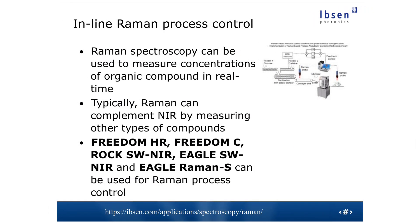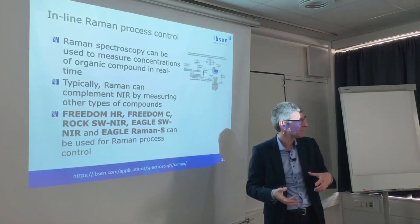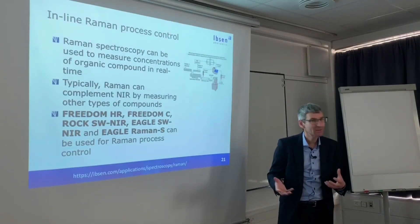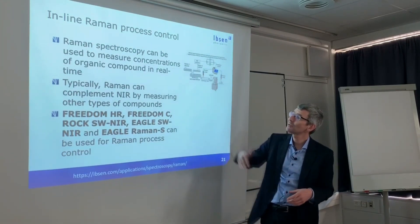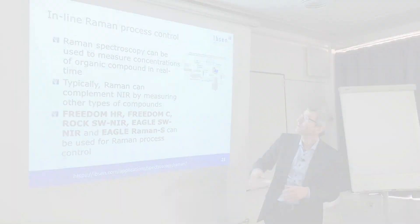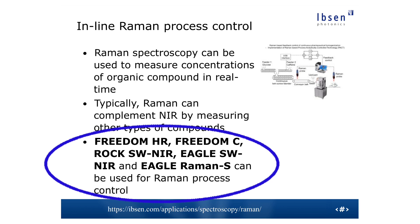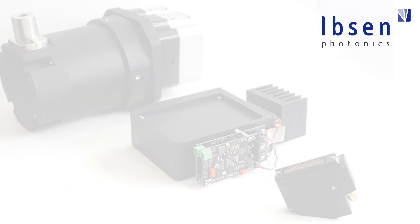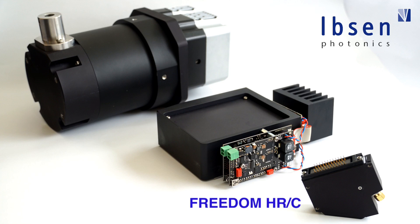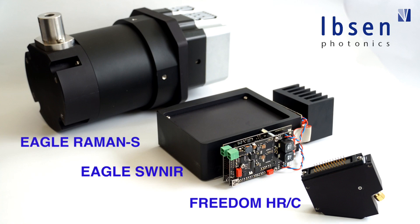Also for inline use — and again this is up and coming, not used a lot yet — Raman is kind of a complementary method to NIR. NIR can see some molecules nicely but not others, and the fortunate thing is that the ones NIR is bad at, Raman is typically better at. So some will combine the two, or some will simply use Raman instead of NIR. Here you have more choices depending on how difficult your Raman signal is. If it's a low-end, easy measurement, maybe you can use the Freedom HR or Freedom C. But if you need really high sensitivity, you move towards the Eagle Raman S spectrometer.